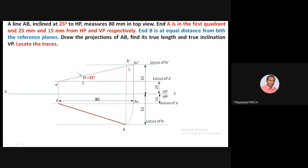Extend the projector from B to identify B-dash in the locus of B-dash. Join A-dash and B-dash — this is the front view of line AB. To find the true length in the top view, rotate the front view: with A-dash as center and B-dash as radius, draw an arc to cut the locus of A-dash, marking point B2-dash. Extend the projector from B2-dash to the locus of B to fix point B2. Join A and B2 — this is the true length in the top view.